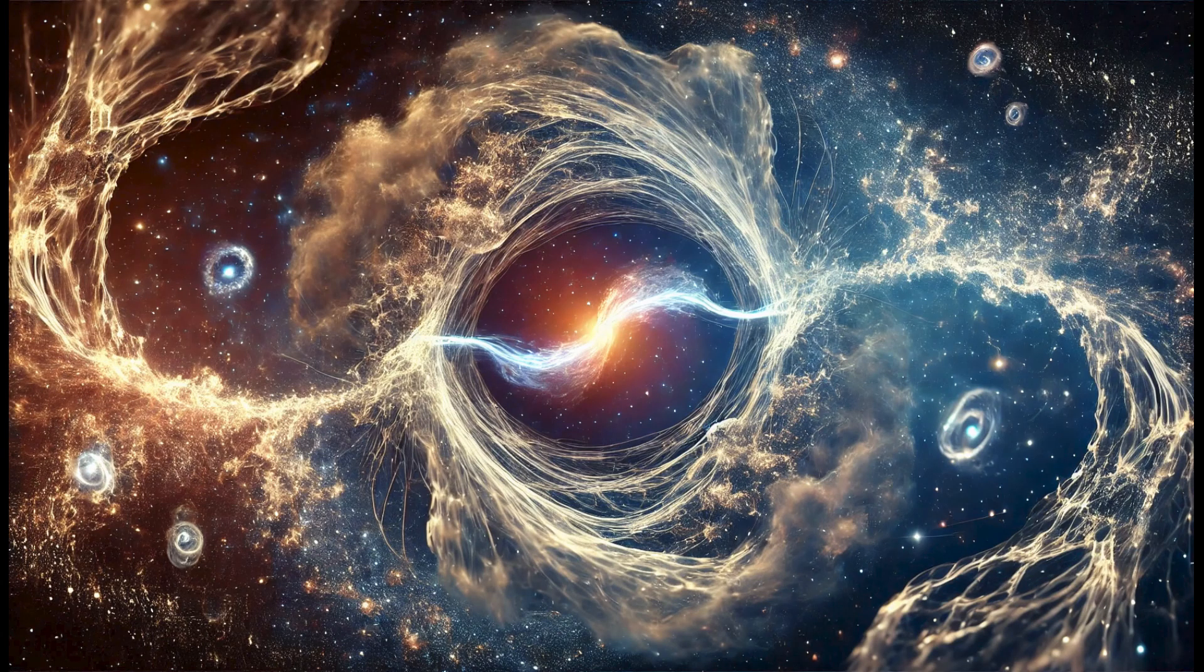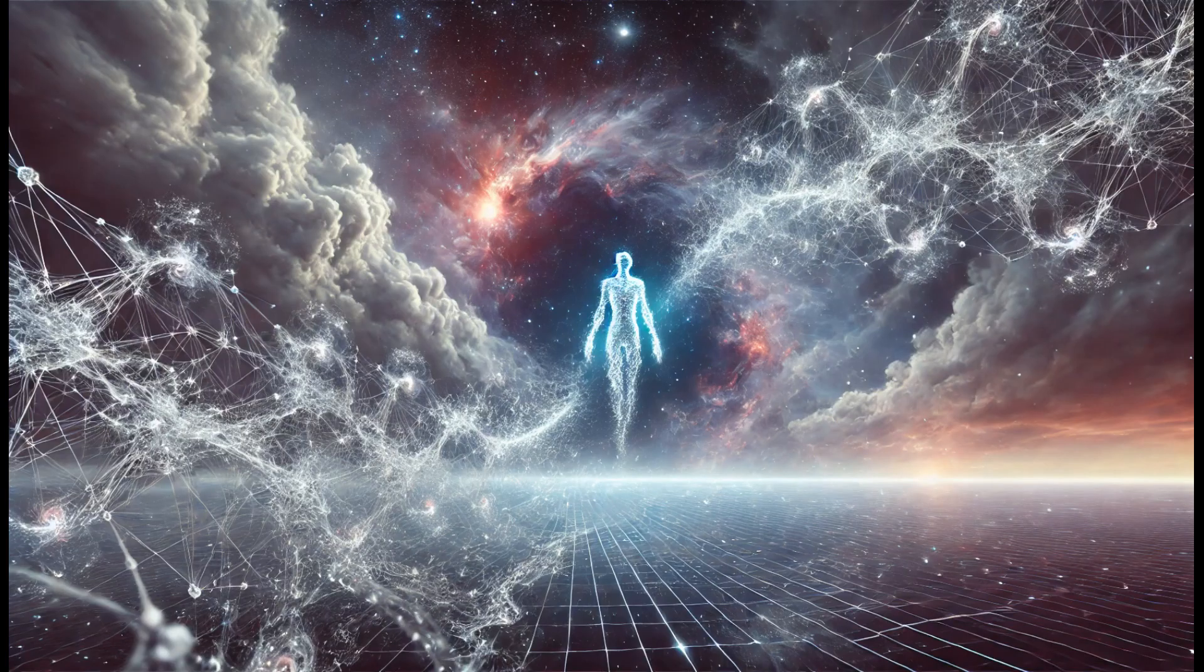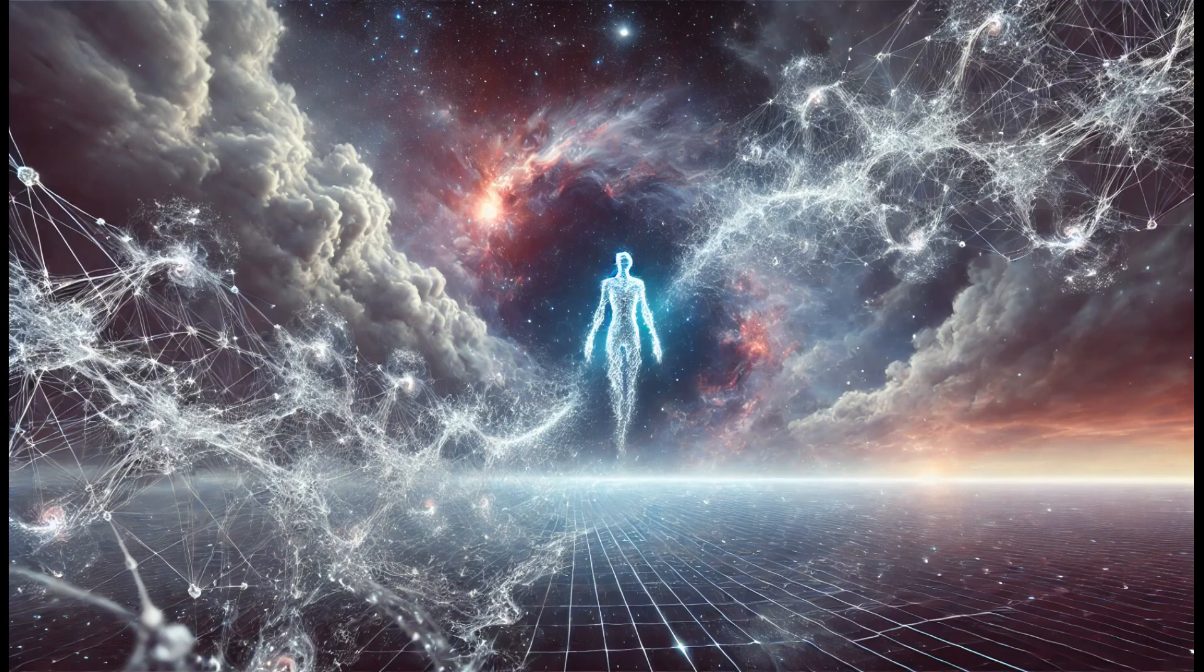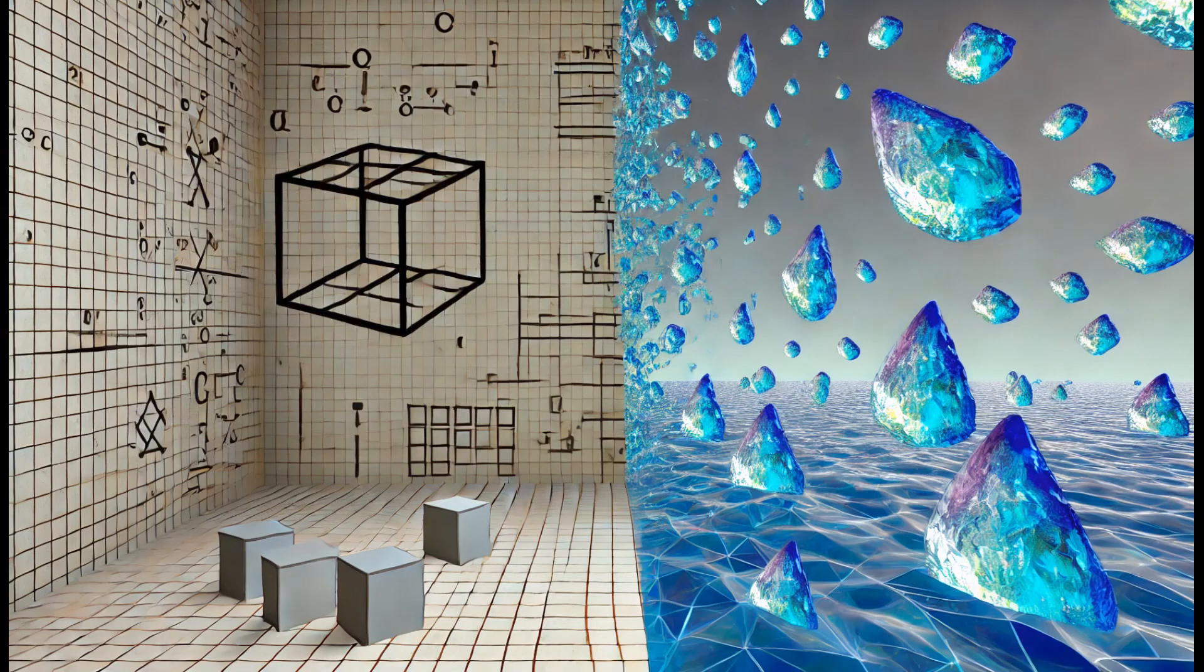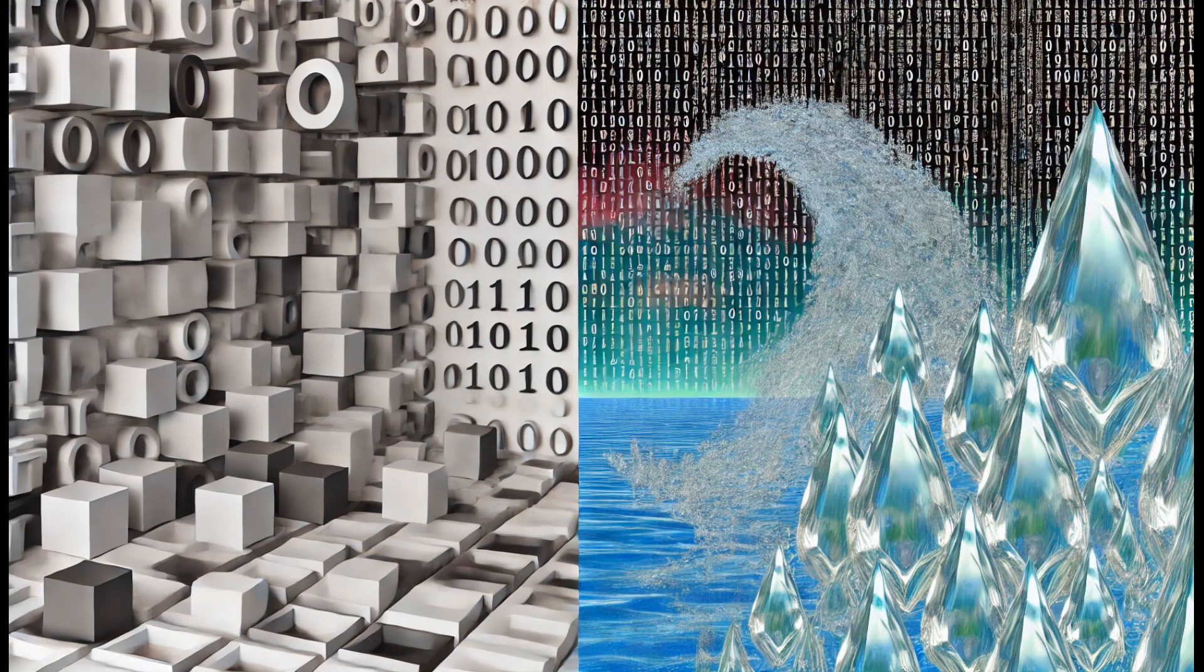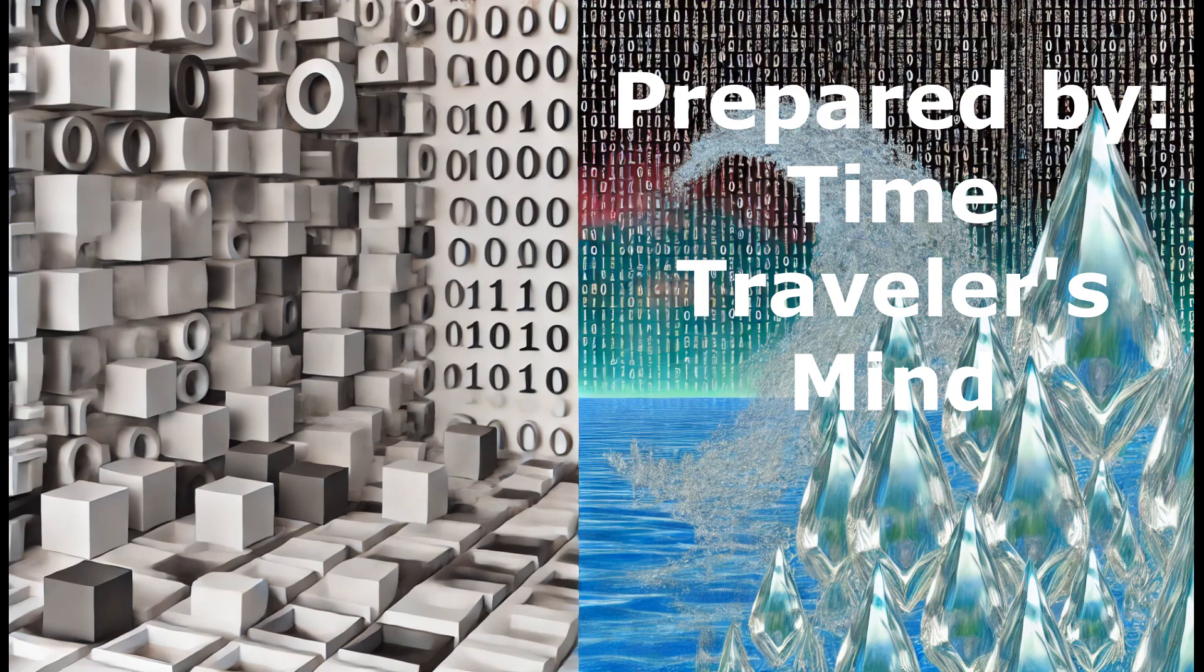There are also objections to the idea that tubulin, a protein found in the microtubules of neurons, could exist in a superimposed state long enough to affect cognitive processes. Microtubules are integral to cellular function, but whether they can maintain quantum coherence in the hot, wet, and noisy environment of the brain is still deeply debated. Until a theory of quantum gravity is developed and tested, and the quantum nature of biological systems is better understood, the Orch-OR hypothesis will remain a stimulating but speculative entry in the ongoing discourse on the nature of consciousness.